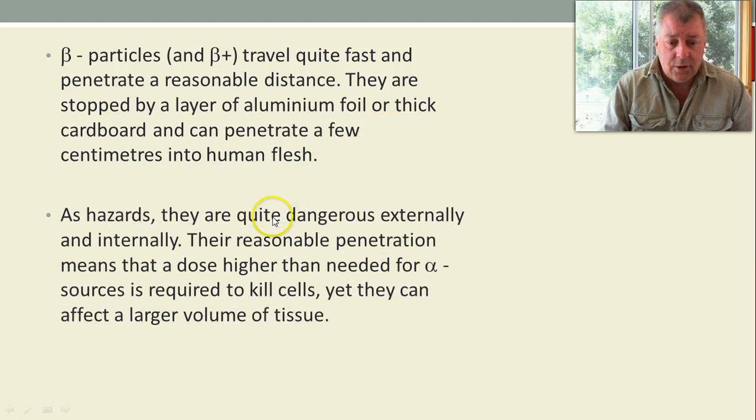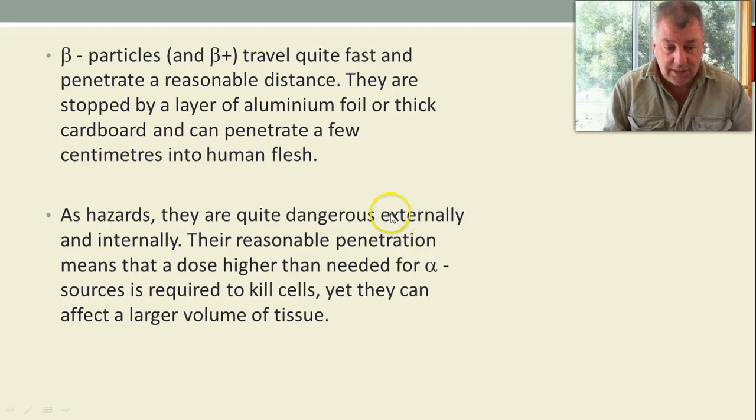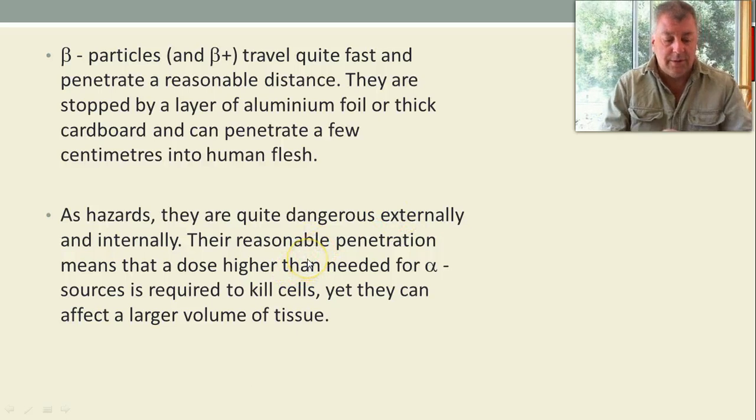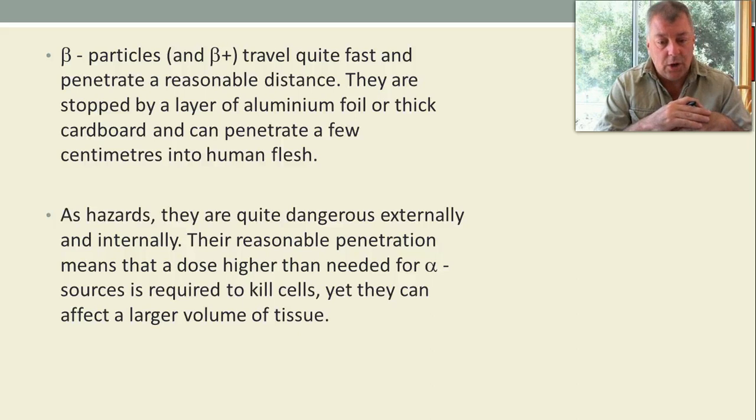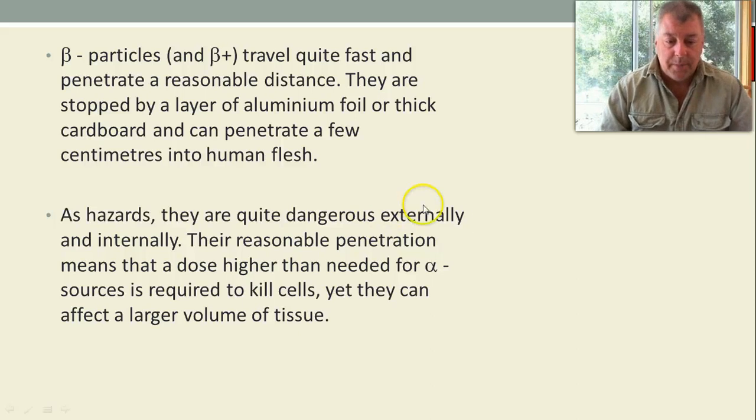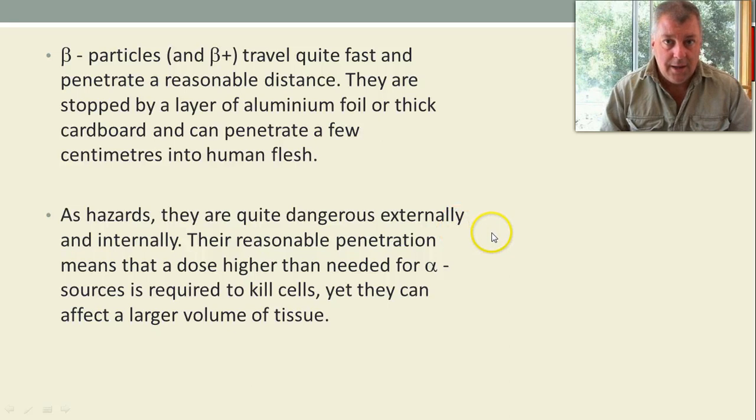As hazards, they're quite dangerous externally and internally. They've got reasonable penetration. So, if you have a beta emitter close to your skin, it doesn't just hurt your skin. It can affect things underneath your skin. And some of your organs are quite close to the surface. So, you don't want to get too high a dose. And even though it's not as ionising as alpha, it can cause ionisation.